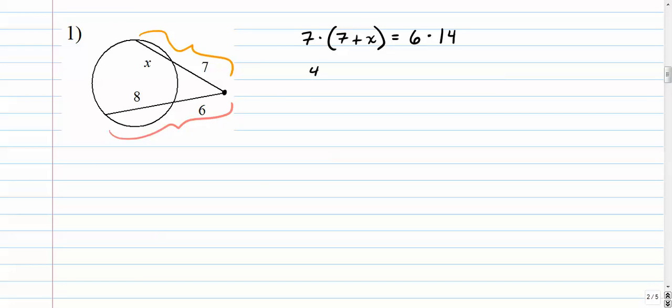So here we go. We're going to distribute. We get 49 plus 7x equals 60 plus another 24 is 84. We're going to subtract 49 from both sides. So we get 84 minus 49. Let's do it the old-fashioned way here. 35. Looks good. We'll divide by 7. x is 5.